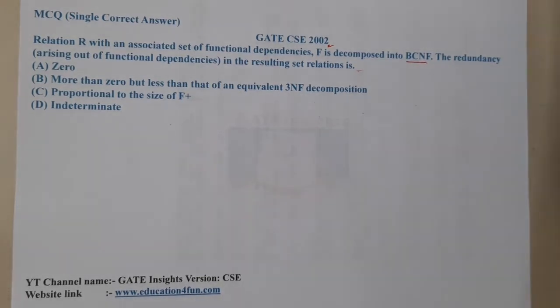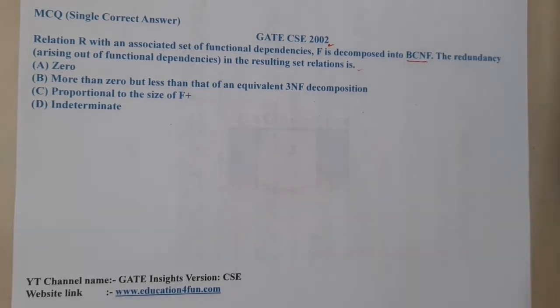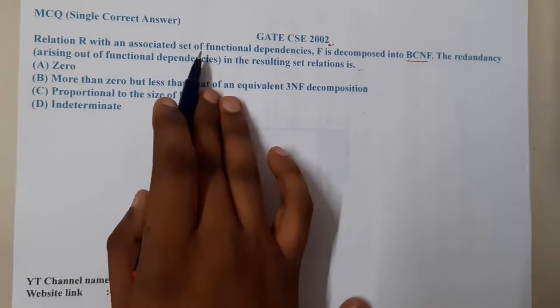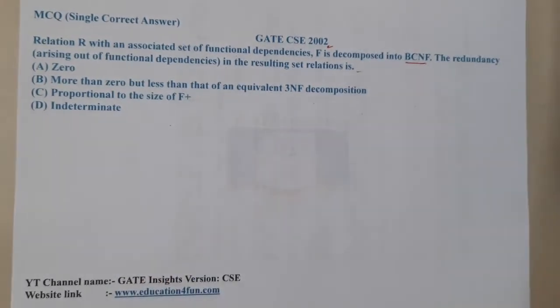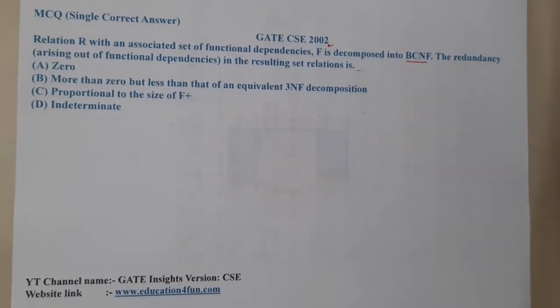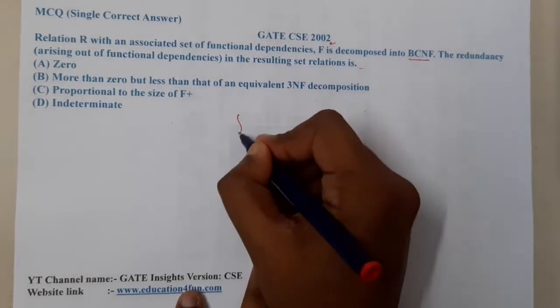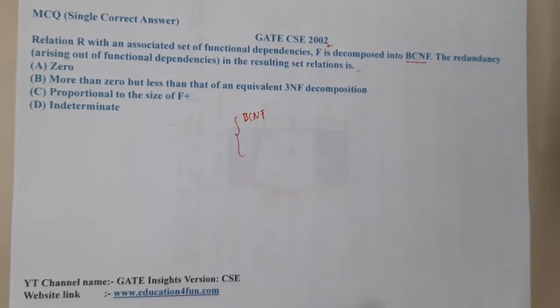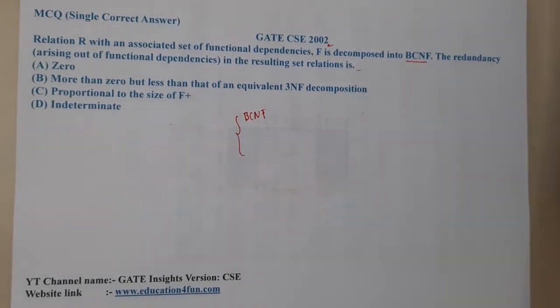First, let us try to understand the question carefully. Relation R with an associated set of functional dependencies - they are saying some functional dependencies are available and the function F is decomposed to BCNF, so indirectly now it is in BCNF. And the redundancy arising out of functional dependencies in the resultant is - so now they are saying how many redundant things will be there in this particular thing.